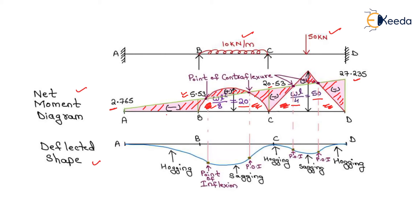The points where the bending moment changes sign — from negative to positive or from positive to negative — are the points of contraflexure. We identify these points in the net moment diagram at the locations where the moment crosses zero.